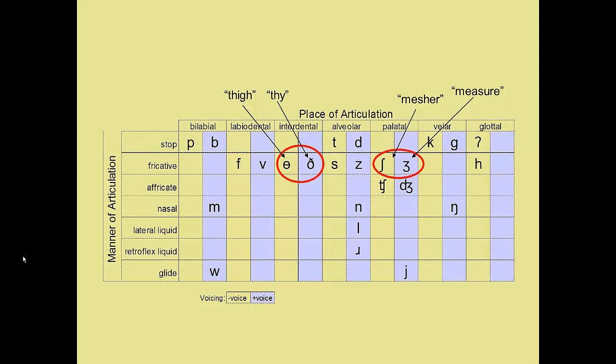The palatal fricatives also have unique symbols. The elongated s is the symbol for the consonant sound 'sh,' as in the word 'shoe,' while the lower-case z variant is the voiced version, as in the word 'measure.' Measure.